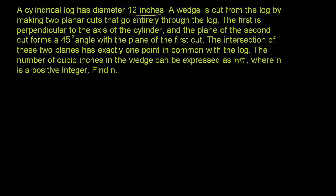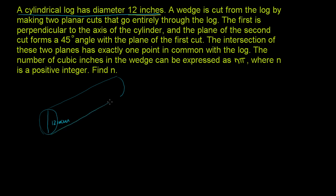Let's draw what they're describing. We have a cylindrical log that has a diameter of 12 inches. The cross-section of the log has a diameter of 12 inches, and it is a cylinder. The first cut is perpendicular to the axis of the cylinder, so it would really just cut it straight. It's perpendicular to the axis.